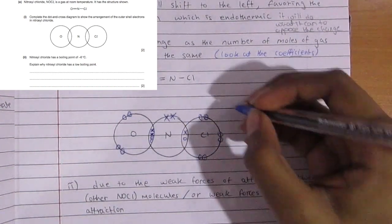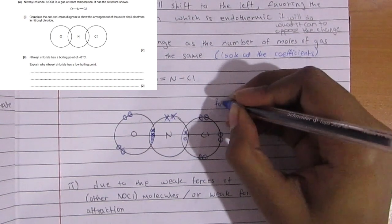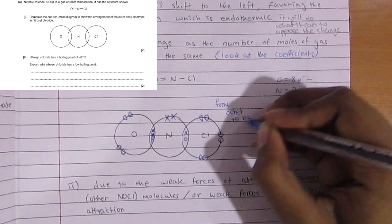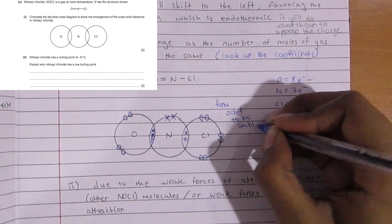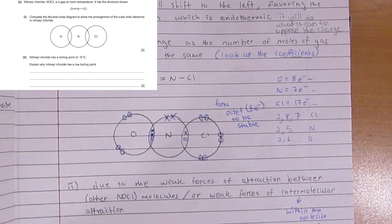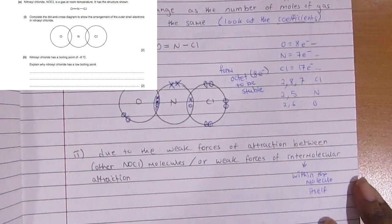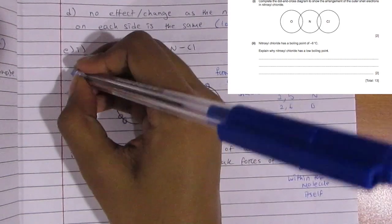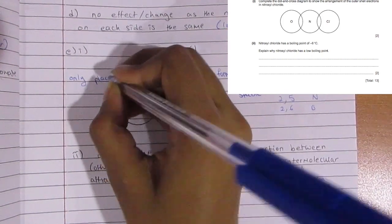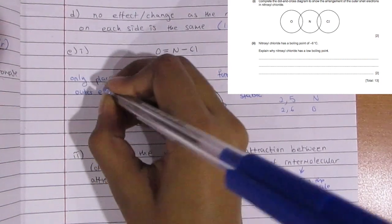Why do they have such a low boiling point? Simply because they have weak forces of attraction between other NOCl molecules, or weak intermolecular forces of attraction. Intermolecular means between molecules—so between the nitrogen, oxygen, and chlorine themselves, it's not that strong.